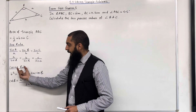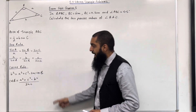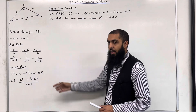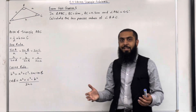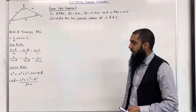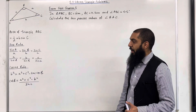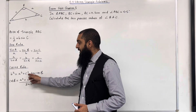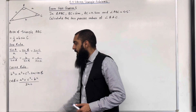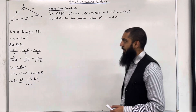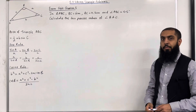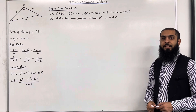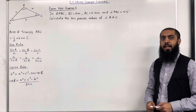The cosine rule is given by b squared equals a squared plus c squared minus 2ac cos B. We can make cos B the subject to rewrite the cosine rule as cos B equals a squared plus c squared minus b squared, all over 2ac. These are the key facts of 9.4 Solving Triangle Problems, which I'll be implementing within exam-style questions.